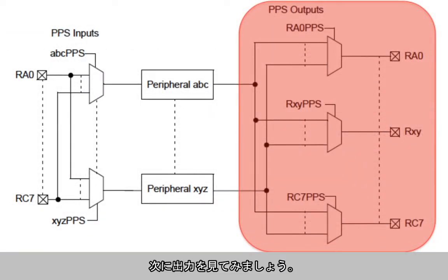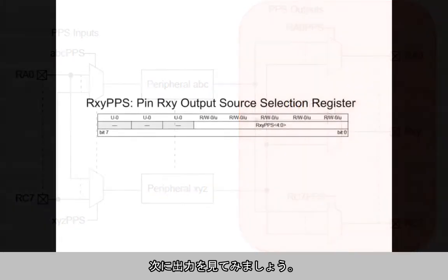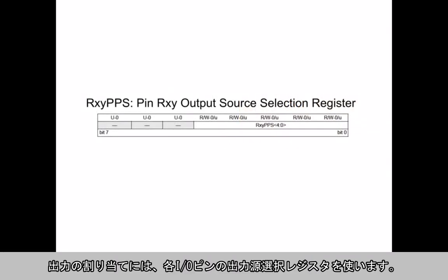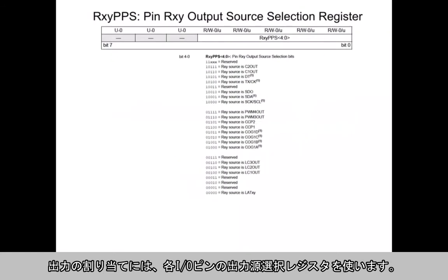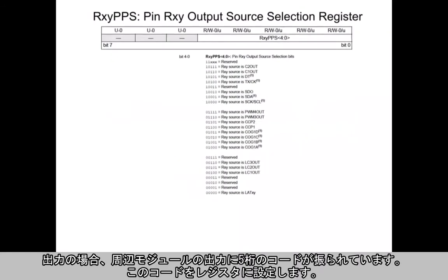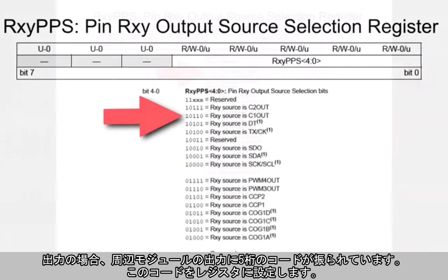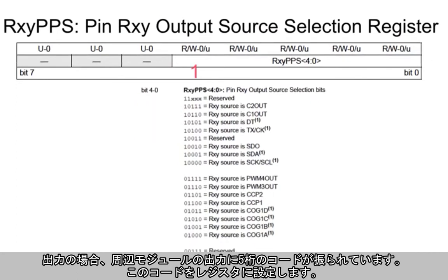Now let's look at the output connections. The output connections use an output source selection register for each I/O pin. In the case of the output, each peripheral output is assigned a five-digit code, and that code is input into the register.